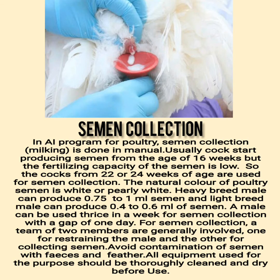For the AI program in poultry, semen collection (milking) is done manually. Usually cocks start producing semen from the age of 16 weeks, but the fertilizing capacity of the semen is low, so cocks from 22 to 24 weeks of age are used for semen collection. The natural color of poultry semen is white or pearly white. Heavy breed males can produce 0.75 to 1 milliliter of semen and light breed males can produce 0.4 to 0.6 milliliters of semen.